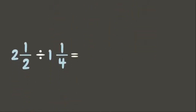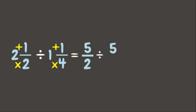How are we going to divide mixed numbers? First, change the mixed numbers into improper fractions. Two times two is four, plus one is five — copy the denominator: two. Then four times one is four, plus one is five — copy the denominator: four.